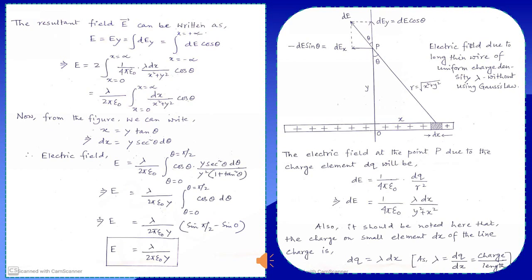We know the electric field at point P due to the charge element dq will be dE = (1/4πε₀) × dq/r². Now we put the value of dq and r². From the figure it is clear that r² = x² + y², and dq = lambda × dx.